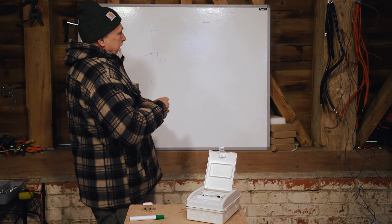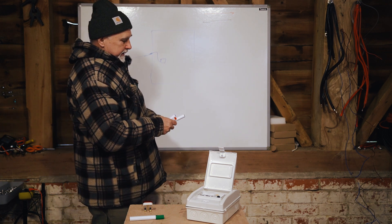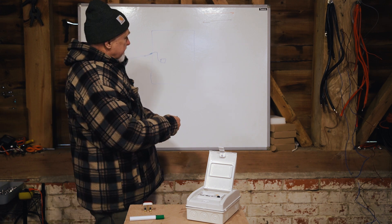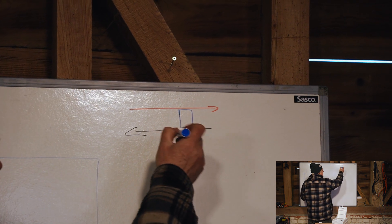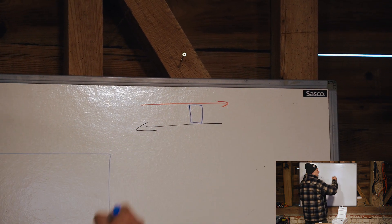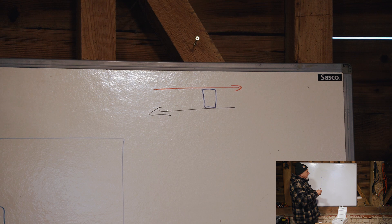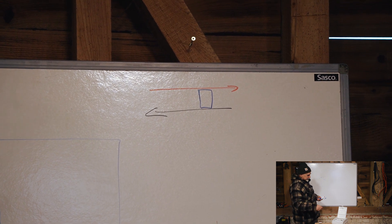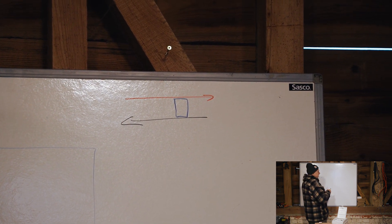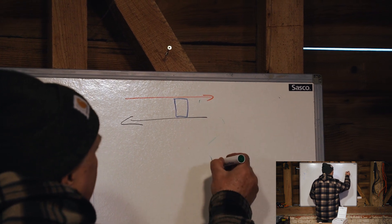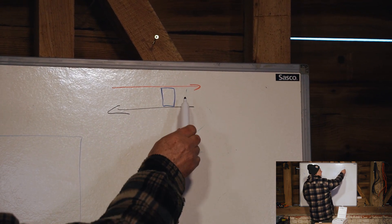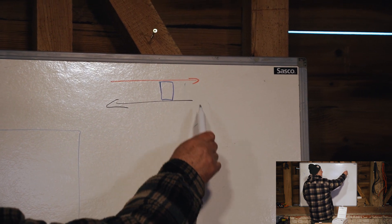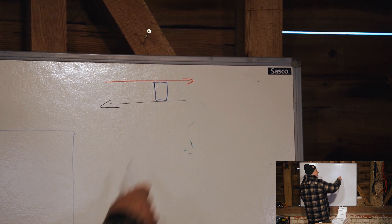Then, basically, what the RCD does is it sits between them. So I'll use blue again. It sits between them here and it measures the difference in the current that's going out versus the current that's coming in. And the whole idea is that if somehow you've got something coming down to earth here, then what it's going to do is it's going to detect that there's a leakage going to earth and it's going to actually switch everything off.